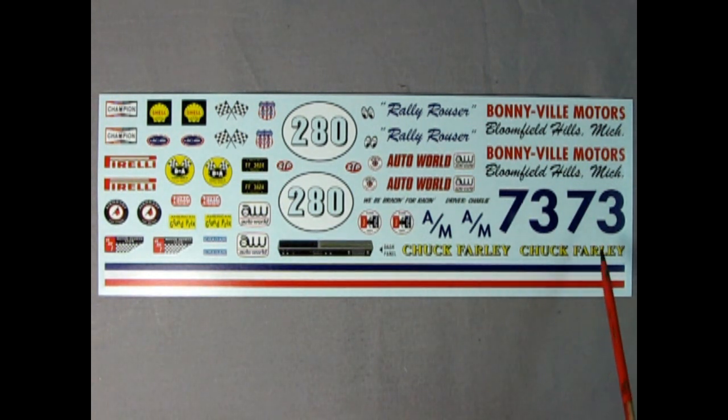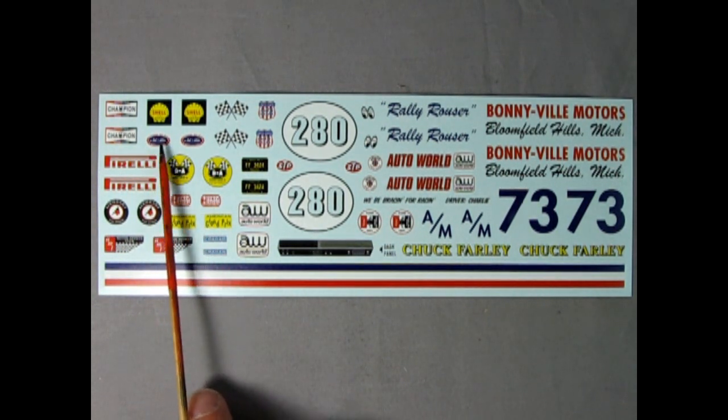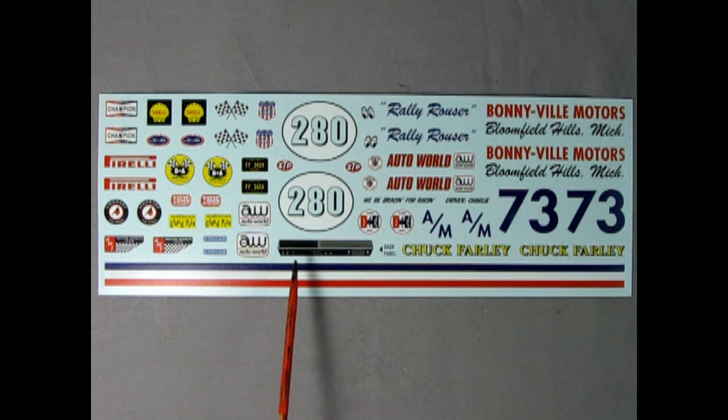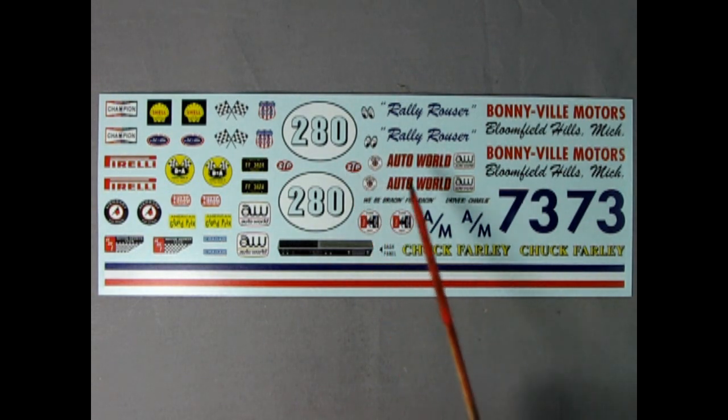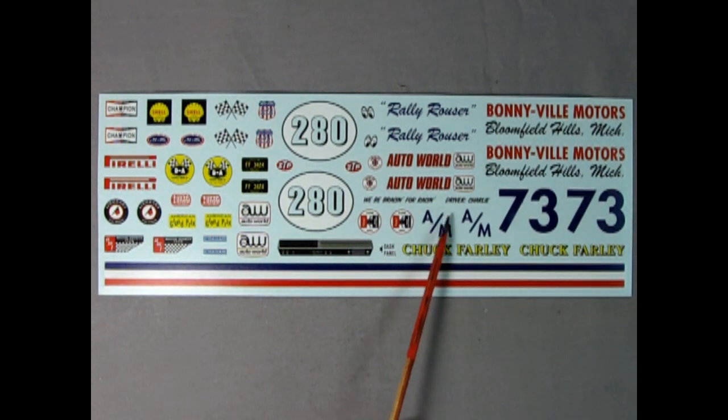Racing number 280 in the circle as well as 73. We also have Chuck Farley here, Bea Bracin for Racin. We have these wonderful Hurst Shifter decals as well as Crager, Champion Spark plugs. I do believe this is NHRA for your Bonneville racer. We have the instrument panel and the red, white and blue racing stripe. Again, Moon Eyes and STP as well as Auto Light. Again, wonderful wonderful decals and A slash M which is the racing class this car would be in. So again, really great work from AMT.